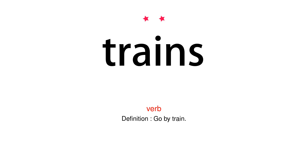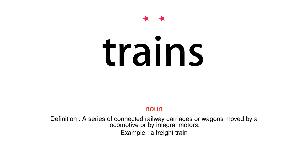Verb. Definition: Go by train. Noun. Definition: A series of connected railway carriages or wagons moved by a locomotive or by integral motors. Example: A freight train.